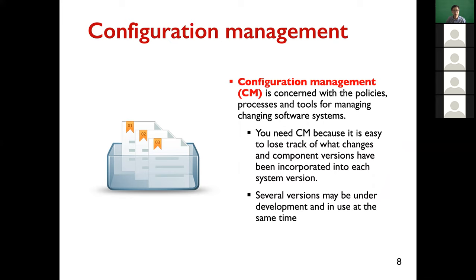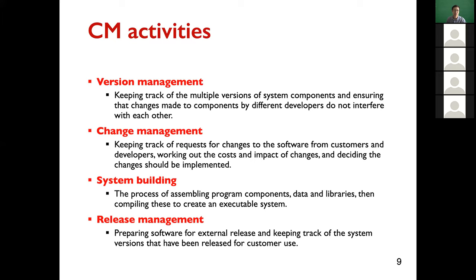In detail, there are four activities in configuration management. The first is version management — think of version control like Git or Subversion. This keeps track of multiple versions of system components. The second is change management, which tracks requests for changes to determine which requests will lead to code changes. You can think of issue tracking systems and bug report systems as tools for managing changes.